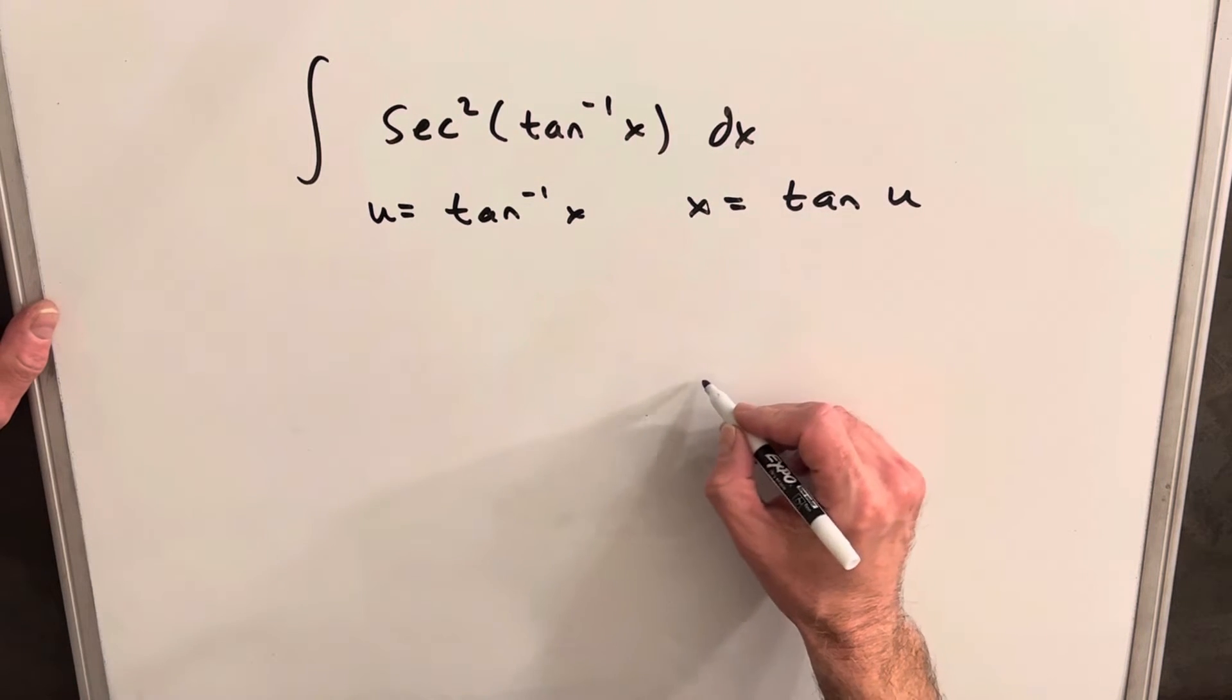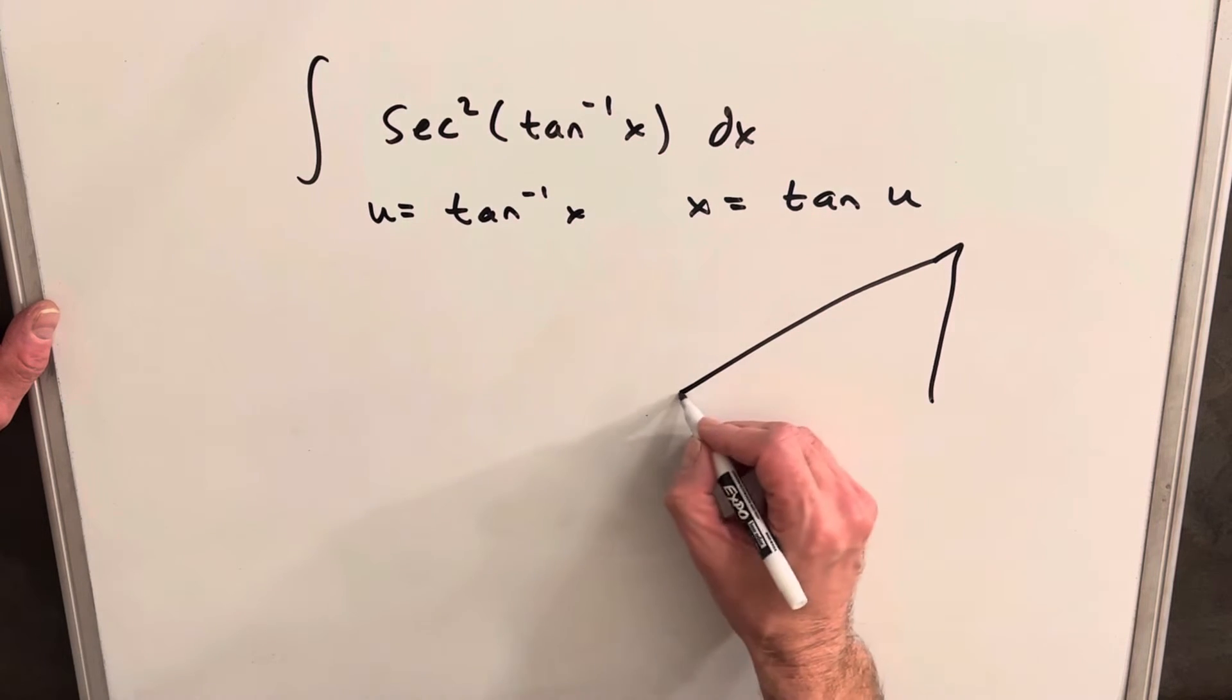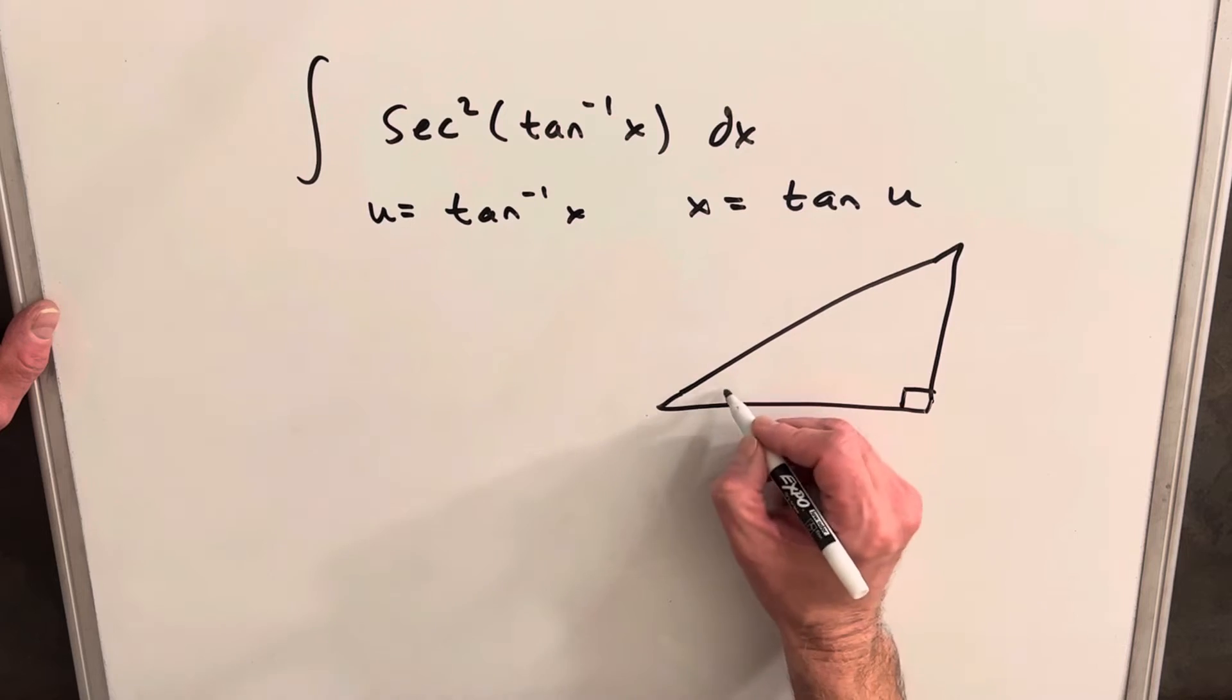I think what we want to do is just look at the triangle, which is often helpful with these inverse functions. If we create a triangle, we can maybe see this a little better.